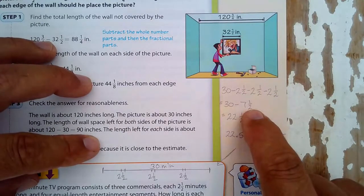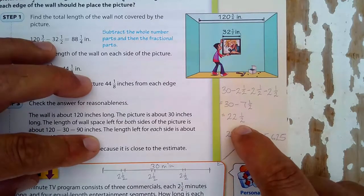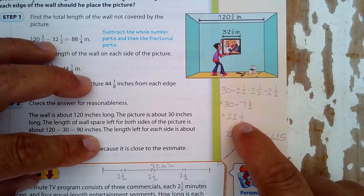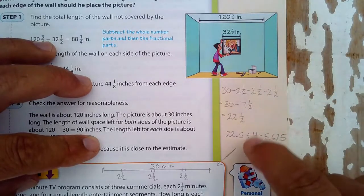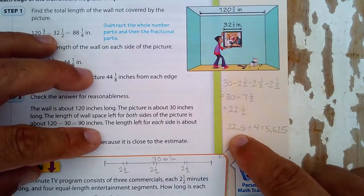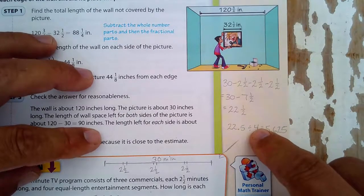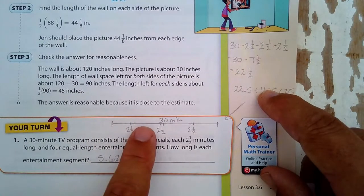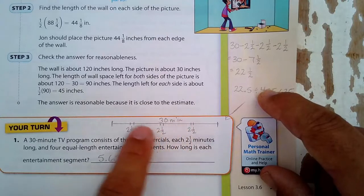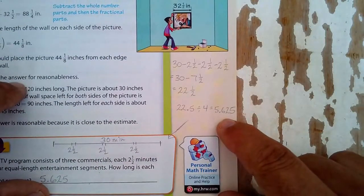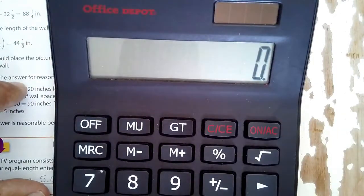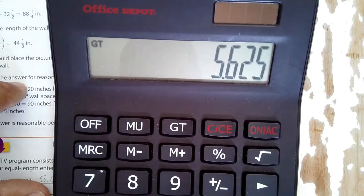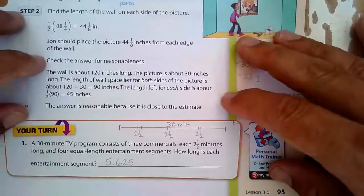So 30 minus 7 and a half, that ends up being 22 and one half. Then I changed 22 and a half to 22.5 and just threw it into a calculator because there are four equal length entertainment segments. You can see them here: 1, 2, 3, 4. So how long is each segment? It is 5.625 minutes. In my calculator here I have 22.5 divided by 4, and that is 5.625 minutes.